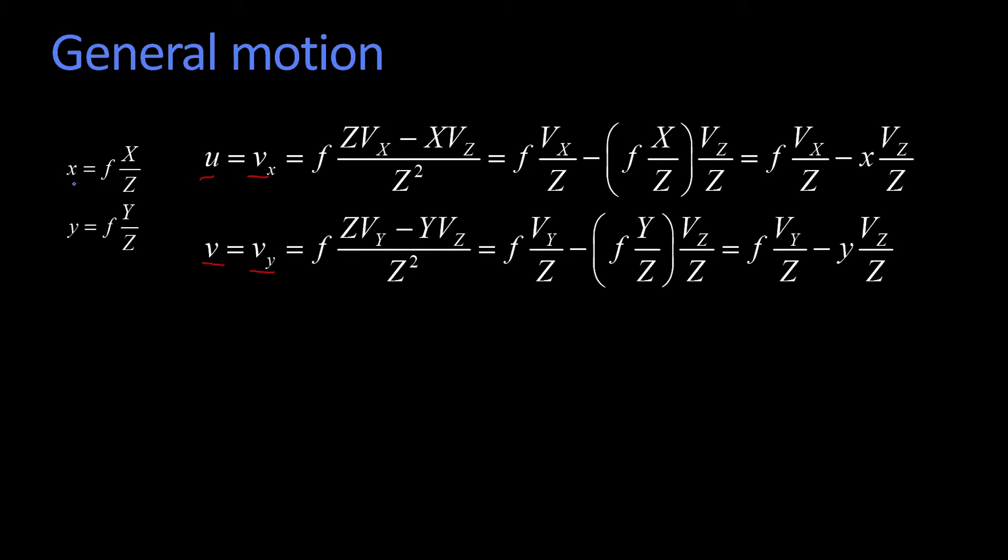To take the derivative of x with respect to time, how it's moving—you remember the formula for the derivative of a quotient? It's just the derivative of the top times the bottom, minus the derivative of the bottom times the top, all divided by the bottom squared. That's what this is, right here.